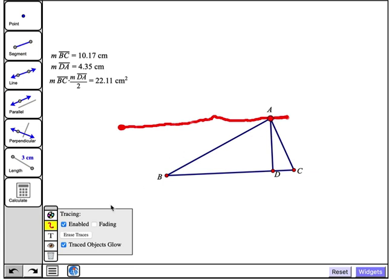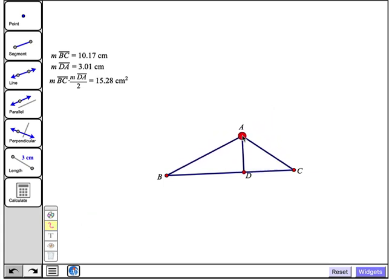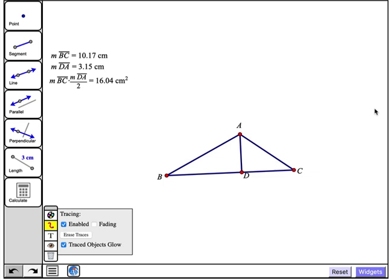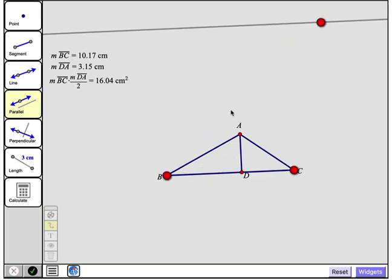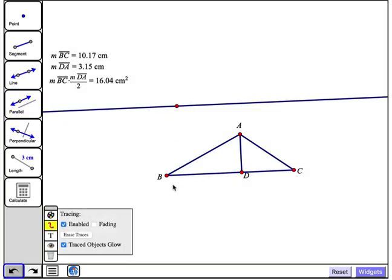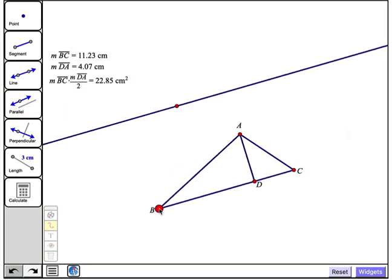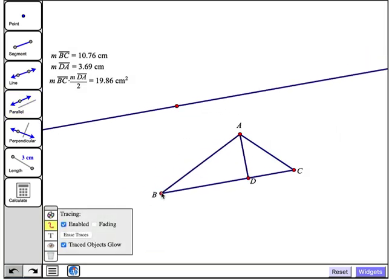So let's erase traces. Let's also tap point A again to turn off its tracing. And let's see if we can make a parallel line here for point A to glide along. So I'll tap on the parallel tool. I want the line to be parallel to BC. So I'll tap on BC and I'll place this point anywhere I like. So now we have a line that is parallel to BC.